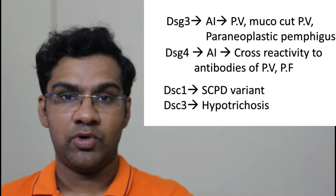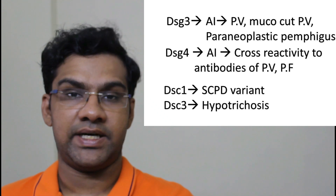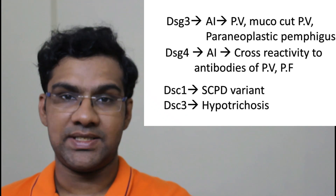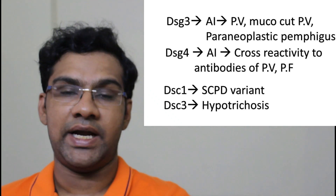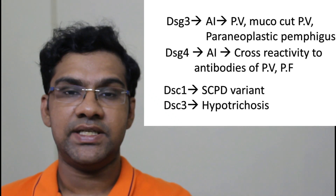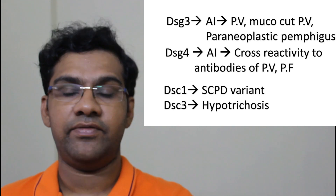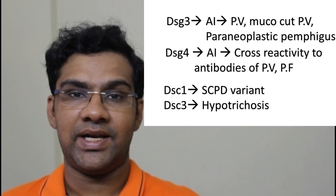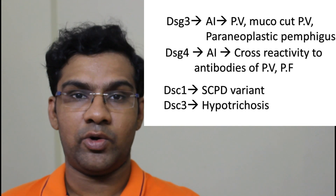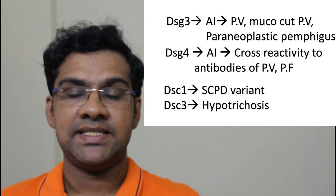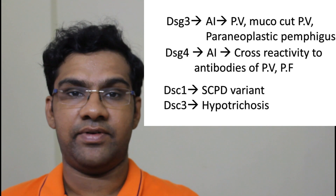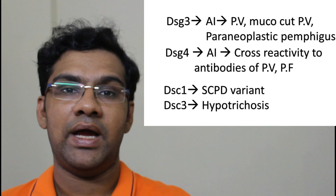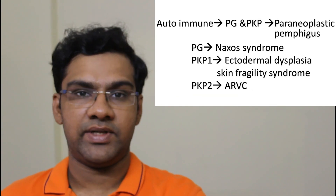Desmoglein 4 is usually present in the stratum corneum; its destruction is due to cross-reaction with antibodies produced in pemphigus foliaceus and pemphigus vulgaris toward desmoglein 1. Desmoglein 1 is majorly targeted in an autoimmune fashion in the subcorneal pustular dermatosis (SPD) variant of IgA pemphigus, whereas desmoglein 3 defects can lead to hypotrichosis.